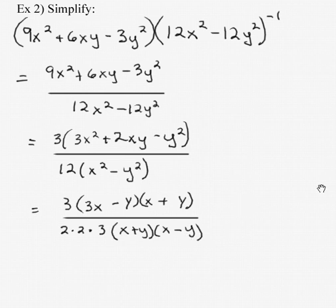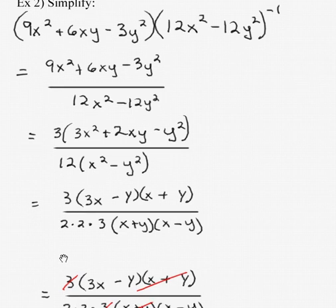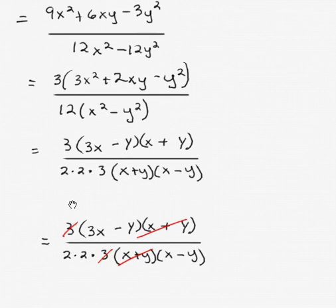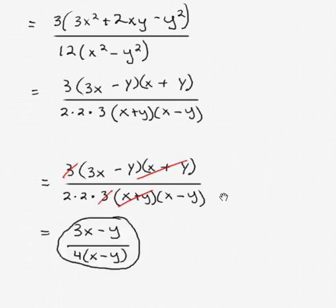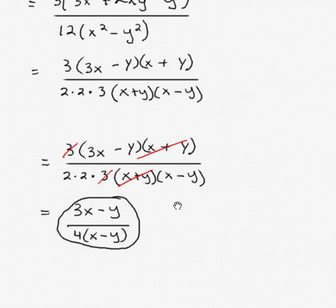Now we're going to look for factors that are the same in the numerator and denominator, and any factors that are the same divide out to 1. So there's a factor of 3 in the numerator and denominator that divides out to 1, and a factor of x plus y in the numerator and denominator that divide out to 1. We're left with 3x minus y in the numerator